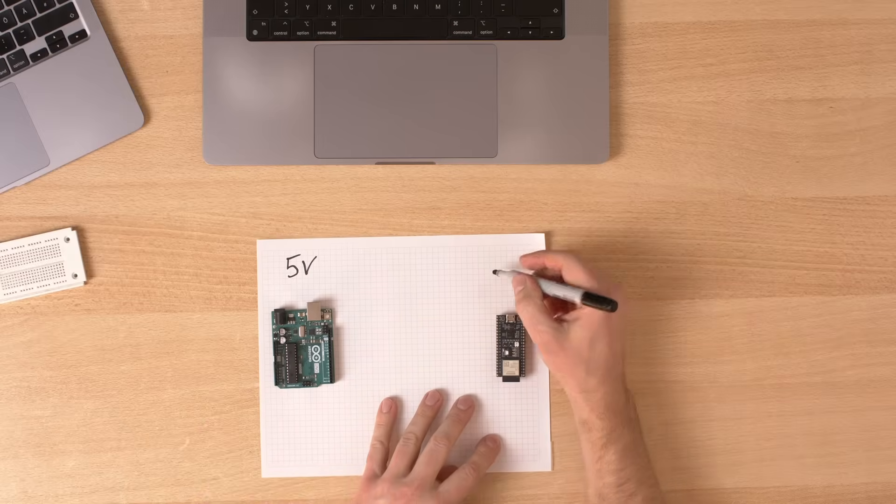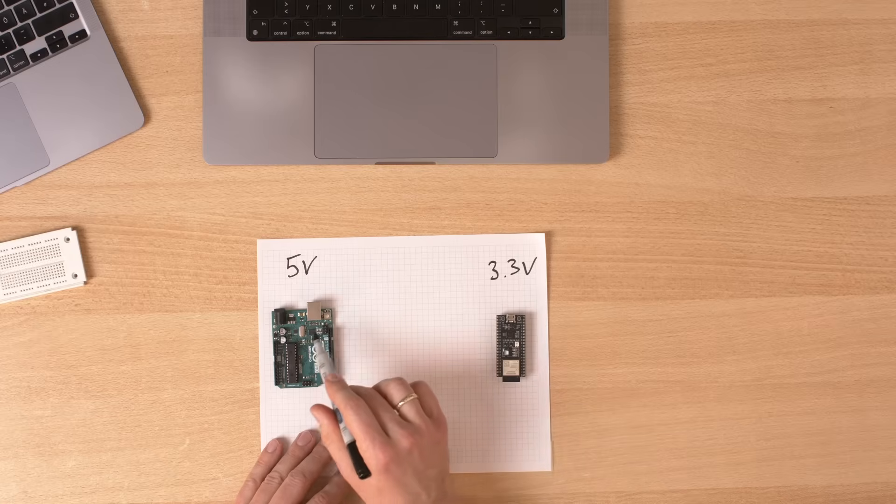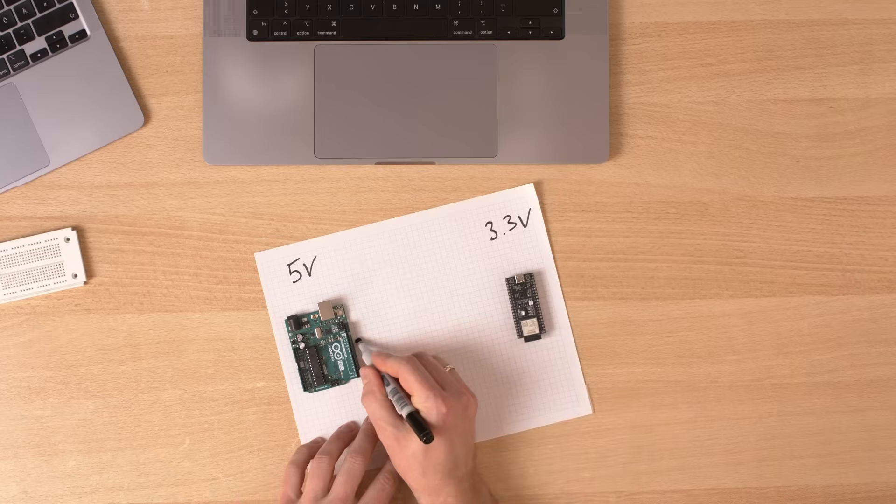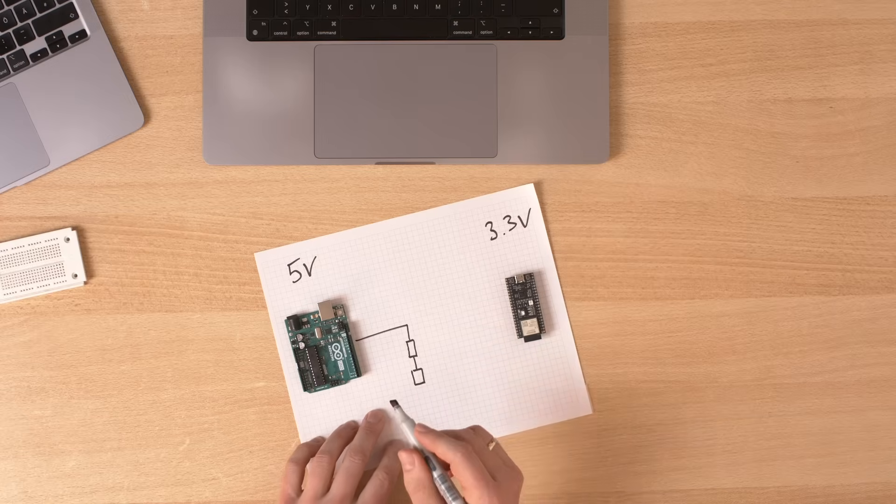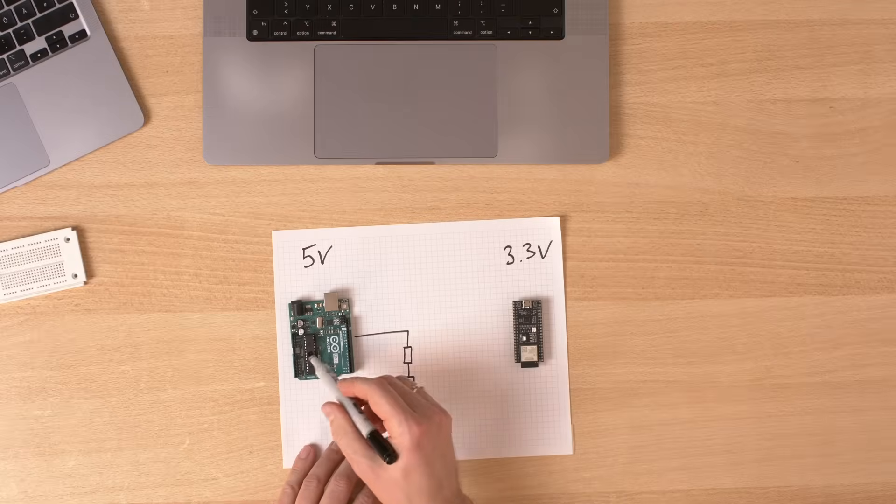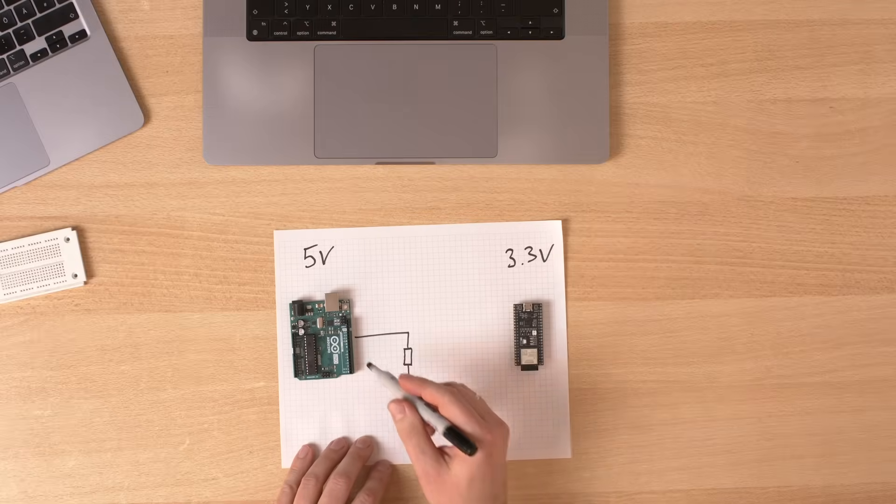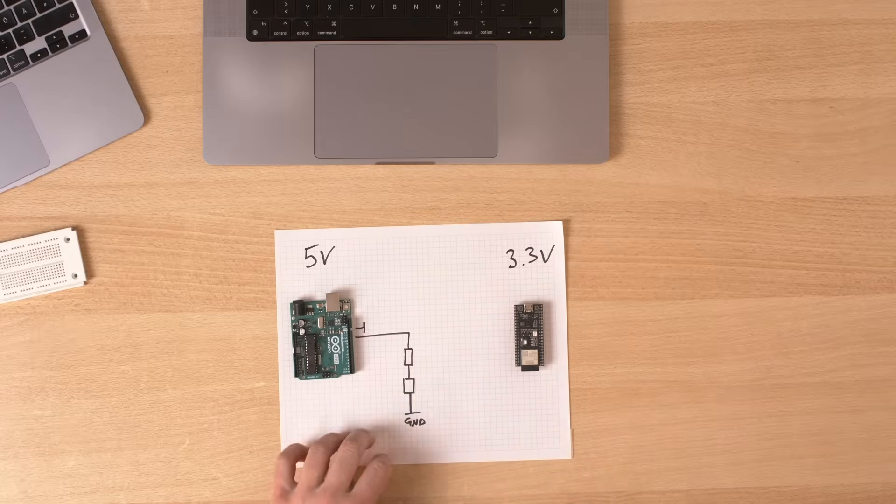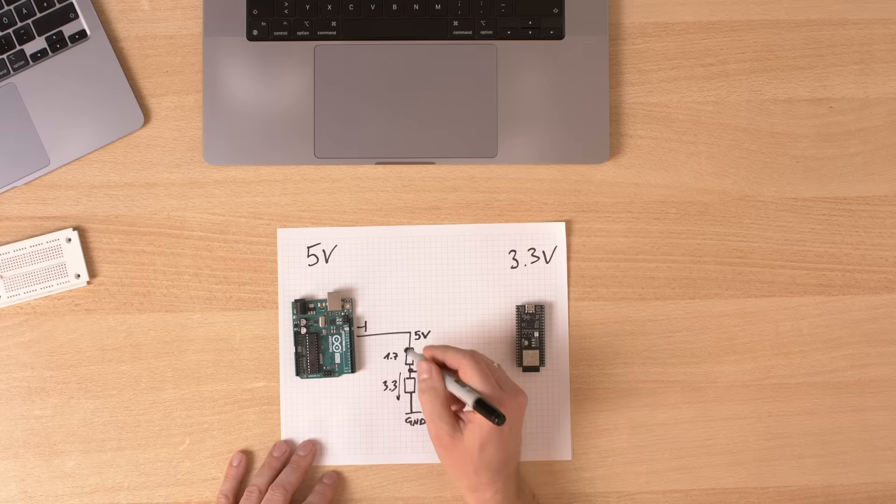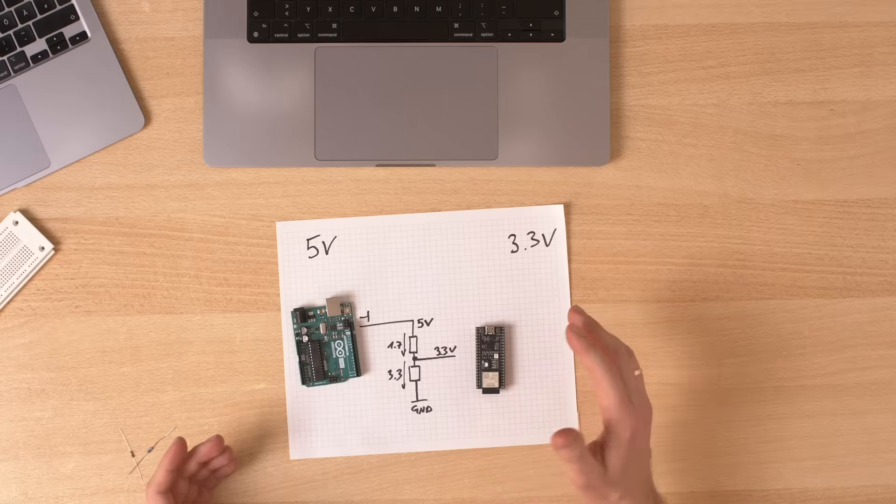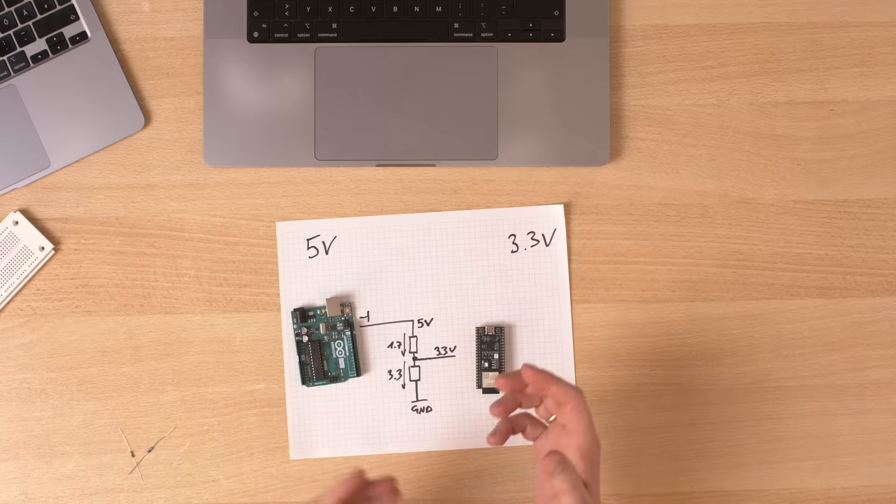This is our 5V system and this is our 3.3V system. What is a safe and simple way to get the signal from this side to this side? You take the output and you feed it into a voltage divider and connect that one to ground. And ground is of course the same ground that we have here. Now that we know this ratio, we can pick resistors. But there is an unlimited amount of resistor combinations that works here. So what should we pick?